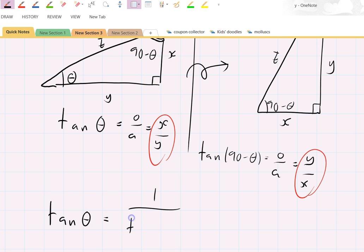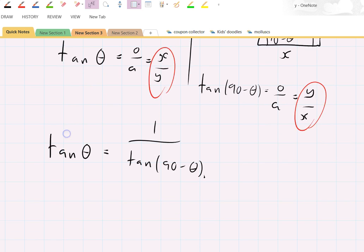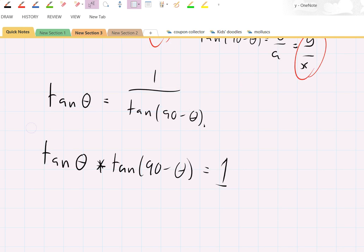You could express that slightly differently. You might say that tan theta times tan of 90 minus theta equals one. That's another nice result, and I'll use that in the next one.